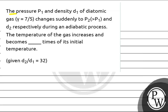Hello, bachoon. Let us read this question. The question says that the pressure P1 and density D1 of a diatomic gas, gamma equals to 7 by 5, changes suddenly to P2 greater than P1 and D2 respectively during an adiabatic process. The temperature of the gas increases and becomes dash times of its initial temperature, given that D2 by D1 equals to 32.